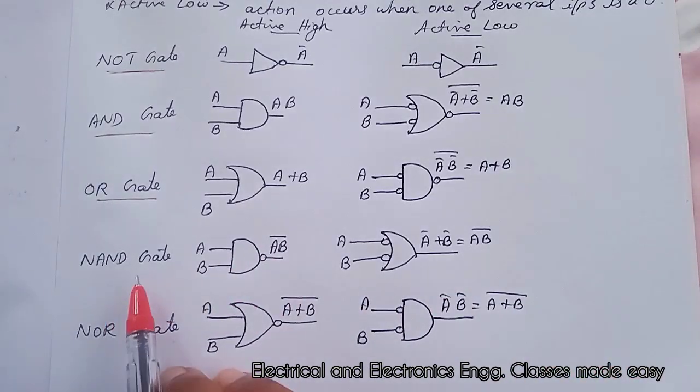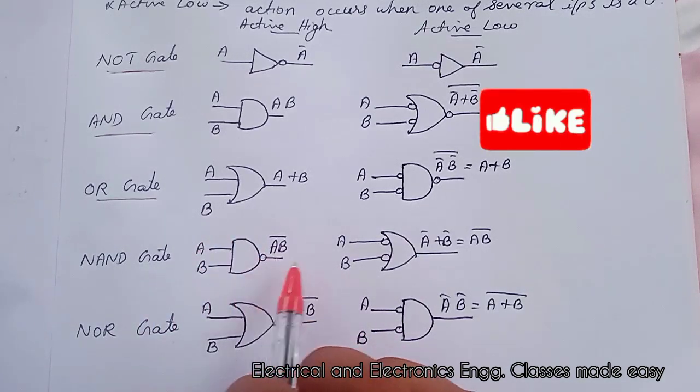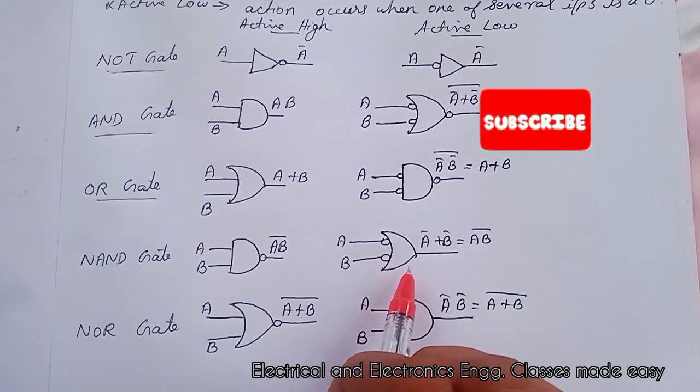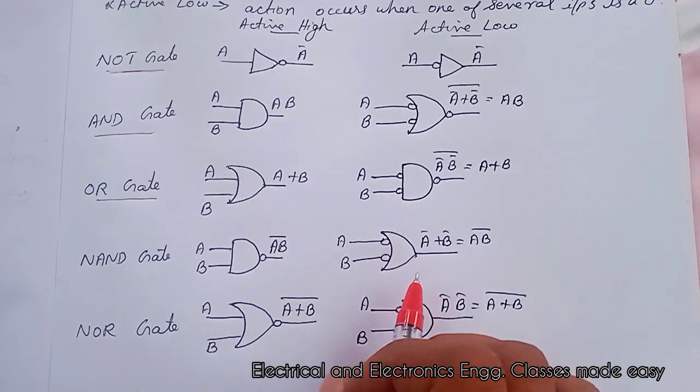And for the NAND gate, this is the active high notation. And this is active low notation. And we know this is bubbled OR gate, or it is called active low OR gate.